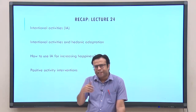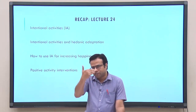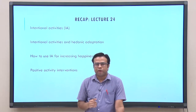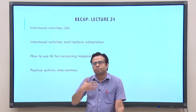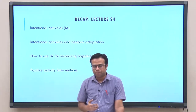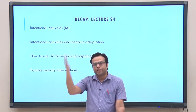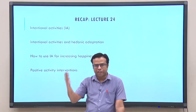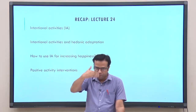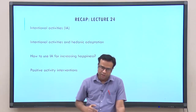We discussed a model called the sustainable happiness model, where we tried to understand that there are three important determinants of happiness: genetics, life circumstances, and intentional activities. As genetics sets certain limits and life circumstances are also relatively stable aspects that do not contribute much to happiness — primarily because we get adapted to them — intentional activities provide ample avenues for exploring and pursuing happiness.